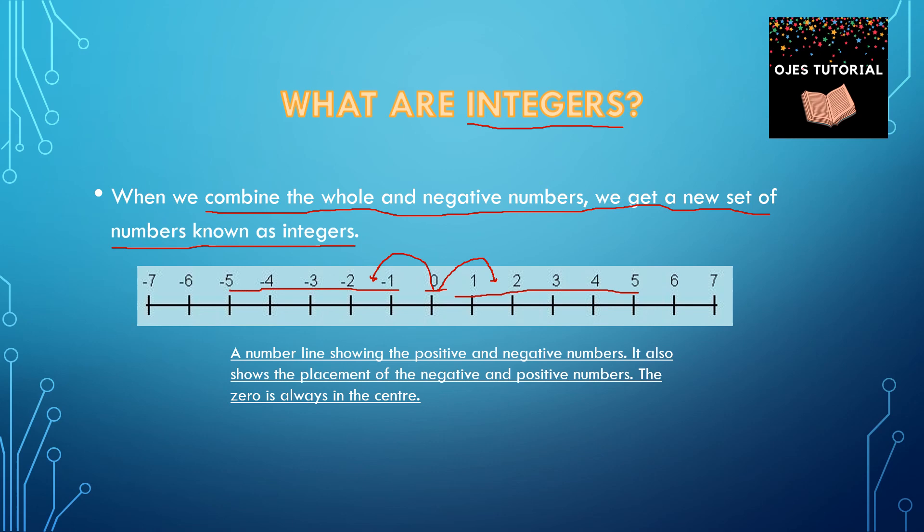So, whenever a number is on the right side of the number line — that is, on the right side of 0 — it is a positive number. And whenever a number is on the left side of 0, it is always a negative number. Thank you.